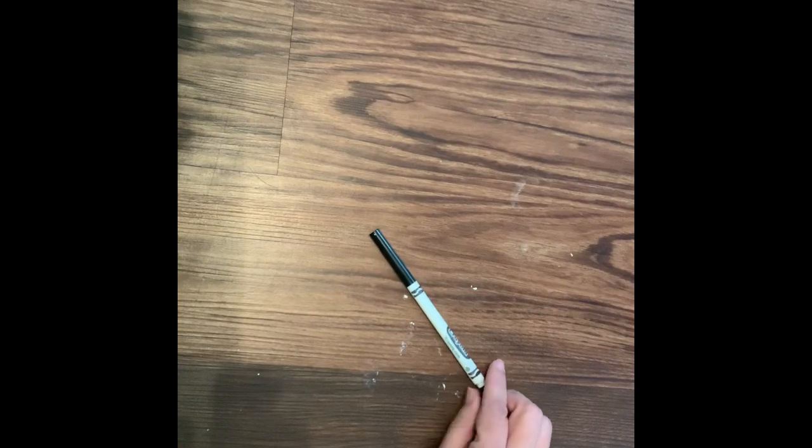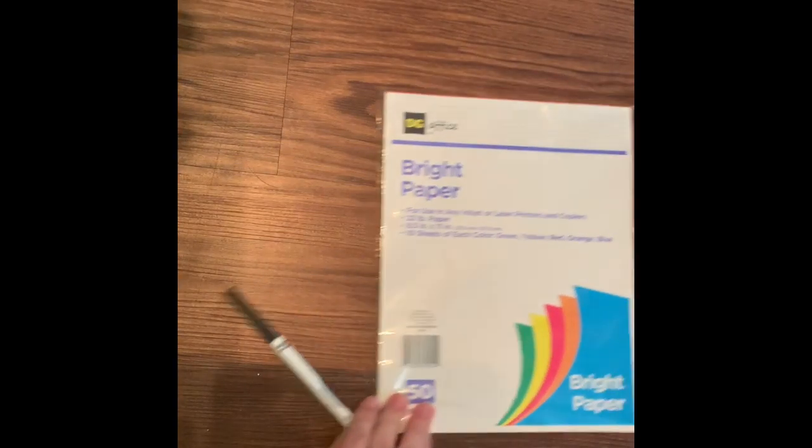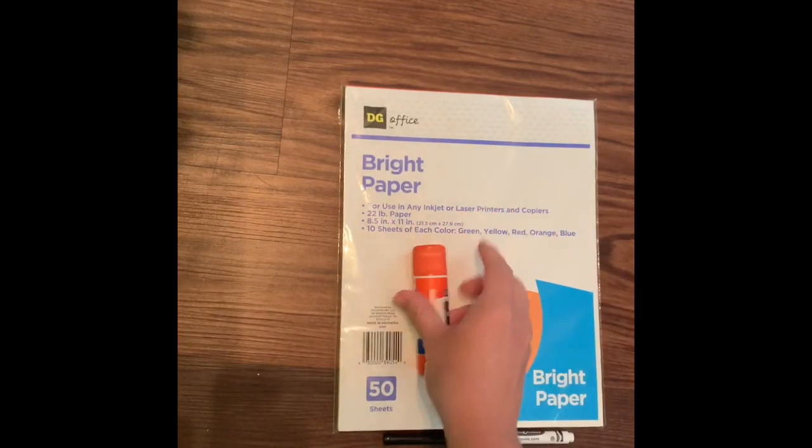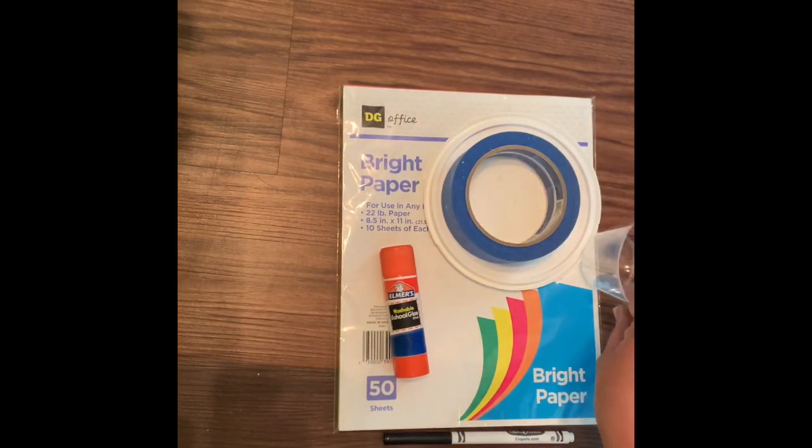Hello students. Today's project is going to be paper board sculptures. So you are going to need something to mark with, colored paper (I got mine at the Dollar General), some glue, and at least three different size circle tracers.